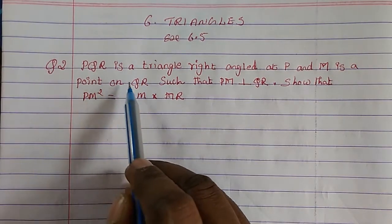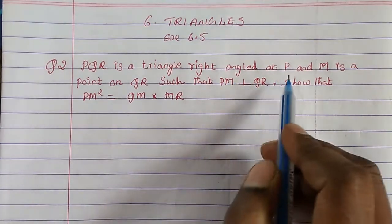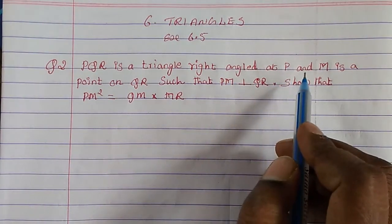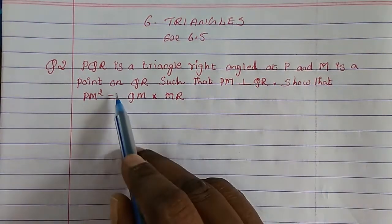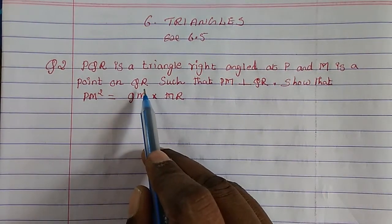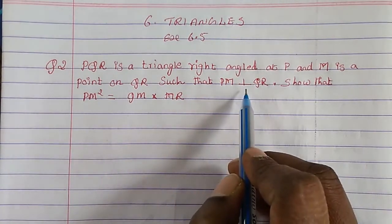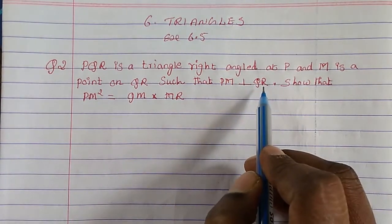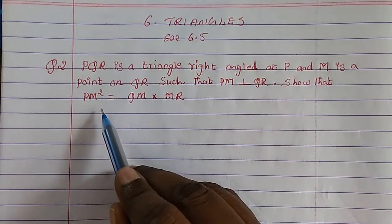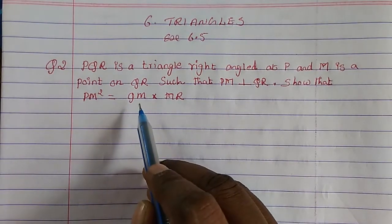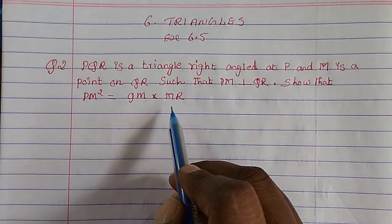PQR is a triangle right angled at P, and M is a point on QR such that PM is perpendicular to QR. Show that PM squared is equal to QM into MR.